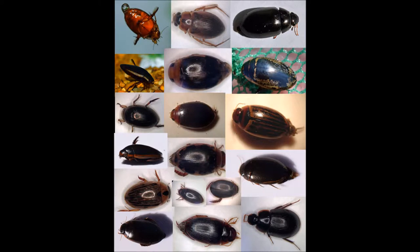Now, beetles are the most diverse order of organisms, but only about 3% of these are aquatic. At the University of Mississippi field station where I do my research, we found over 100 species over the past few years. This diversity means that in small habitats, such as fairly small potholes or temporary ponds, we can often find relatively high numbers of species, which is a useful quality for studying community dynamics.